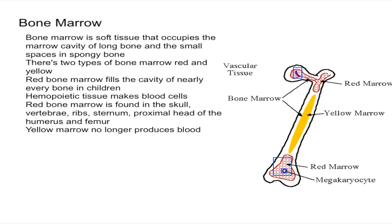You have hemopoietic stem cells, which are responsible for creating new blood cells every day. You get roughly about eight million new cells every second. These hemopoietic cells create every type of blood cell, from red blood cells and white blood cells to platelets.